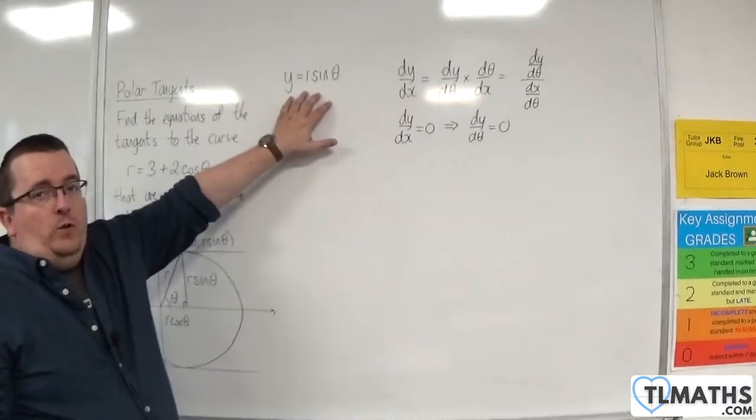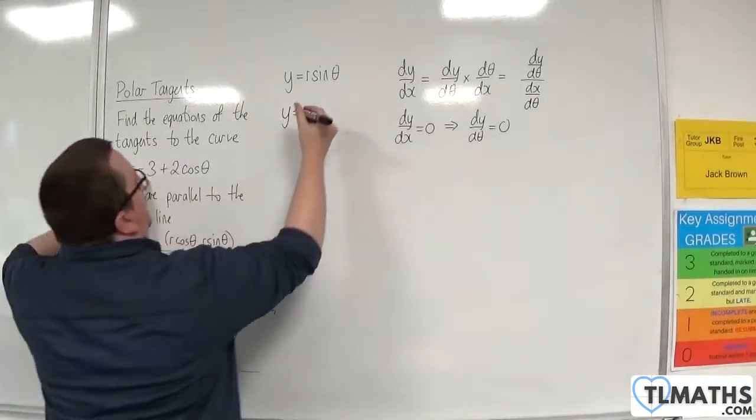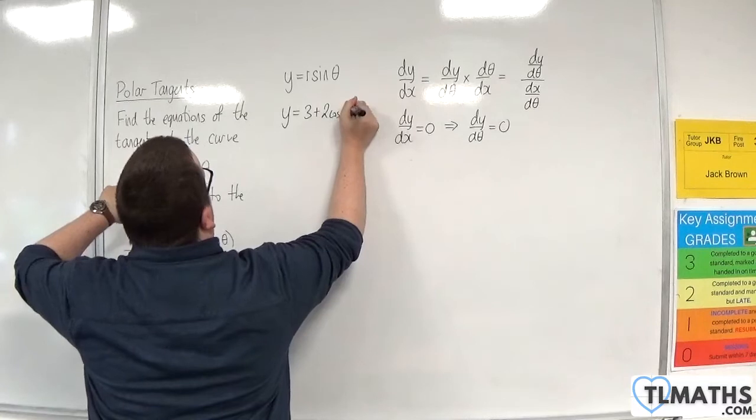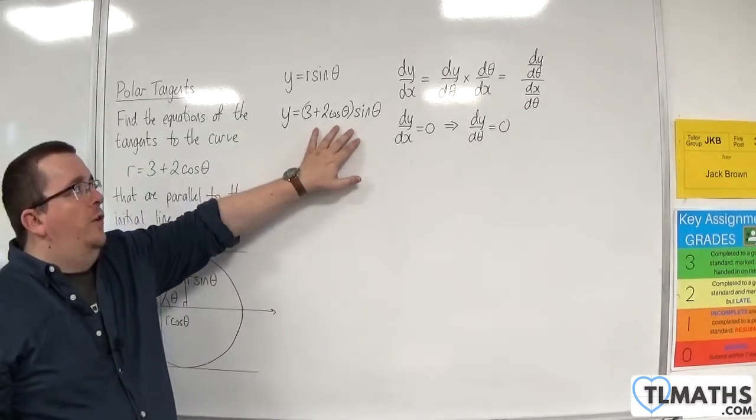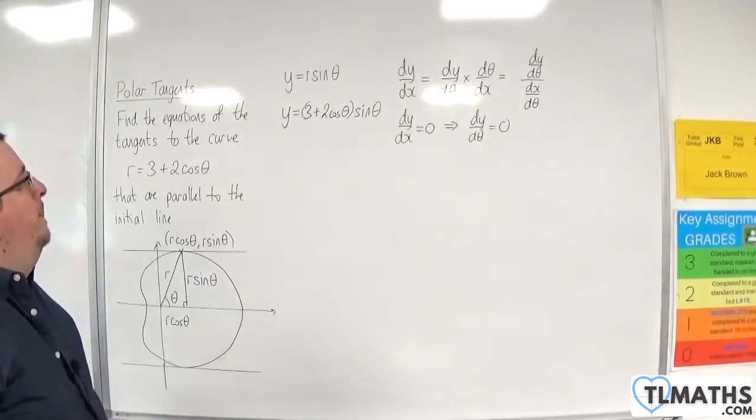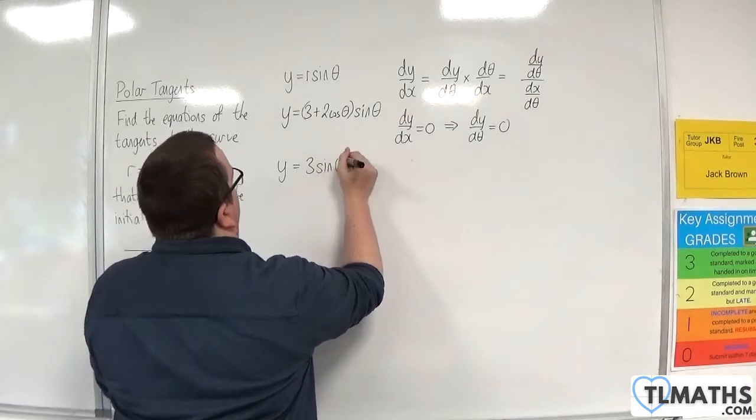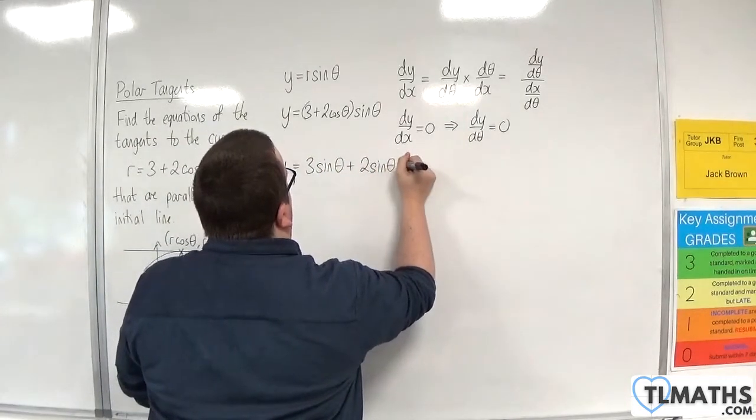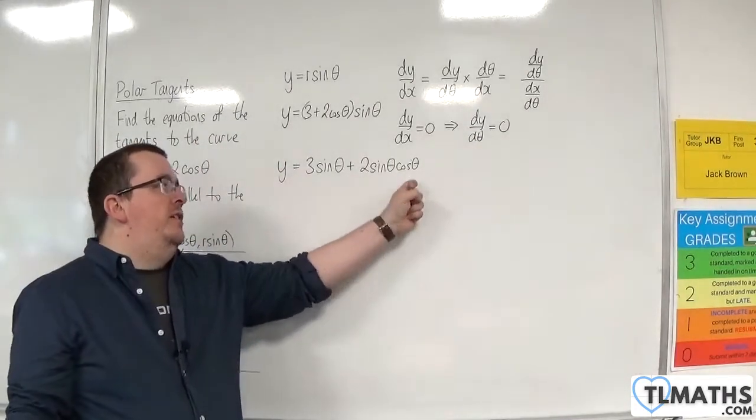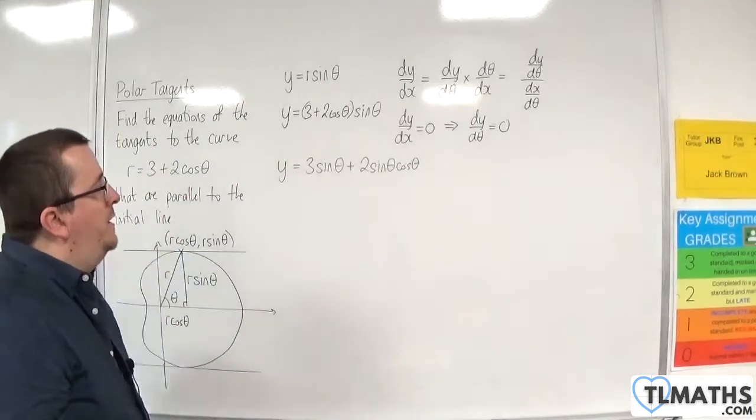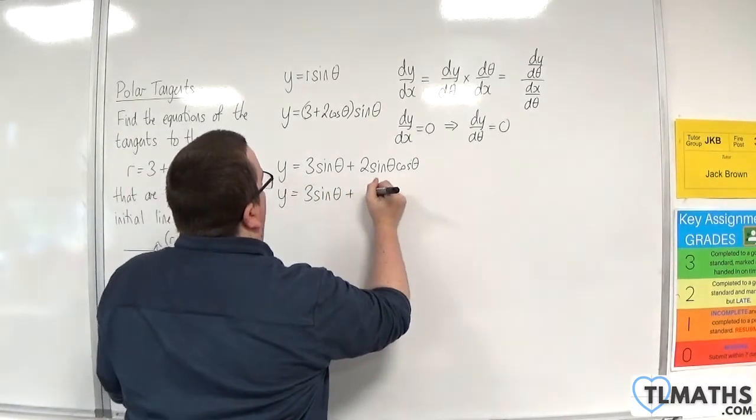So, y is equal to r sine theta, so y would be equal to, if r is this, 3 plus 2 cosine theta times by sine theta. So, that is the equation of the curve that I am interested in working with. Now, I'm going to expand that out, so y is equal to 3 sine theta plus 2 sine theta cos theta. Now, to make my life a little bit easier, I'm going to spot that 2 sine theta cos theta is sine 2 theta using the double angle formula. So, y is equal to 3 sine theta plus sine 2 theta.